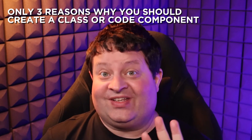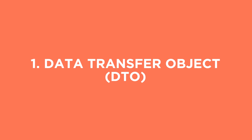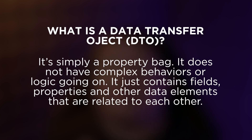Through the perspective of a beginner, there are only three reasons why you should create a class or code component. The first reason is a data transfer object, or DTO for short. A DTO is simply a property bag — it does not have complex behaviors or logic. It just contains fields, properties, and other data elements that are related to each other. So if we had a DTO like an employee object, it might have things like your employee ID, your name, your title, maybe some salary information. All of this is data related to an employee and it should be grouped together.